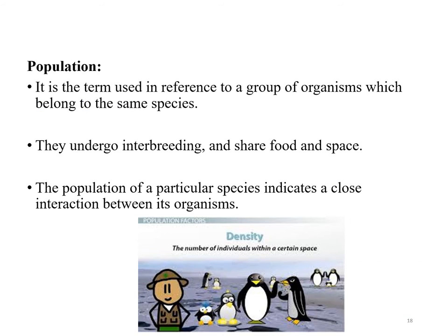Members of the same species that live together in a given area are considered a population. They undergo interbreeding and share food and space. The population of a particular species indicates a close interaction between its organisms.